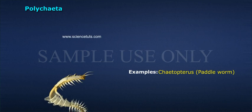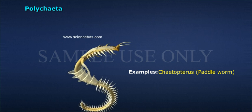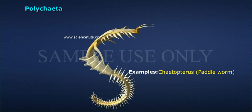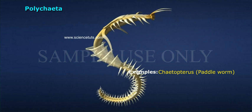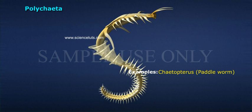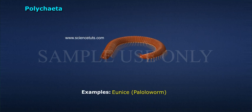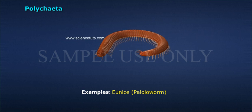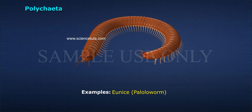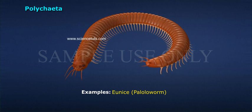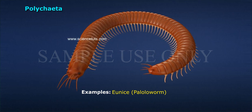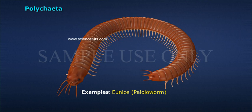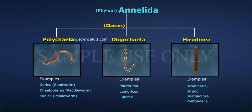Further examples of Polychaeta include Chaetopterus (paddle worm) and Eunice (pallo worm). Class 2 is Oligochaeta.